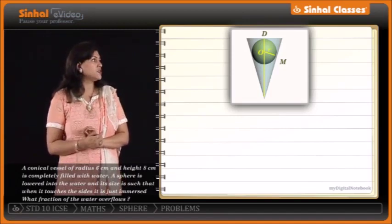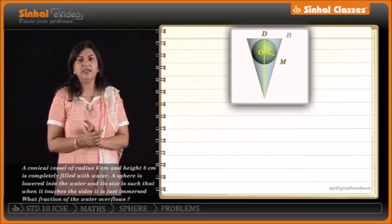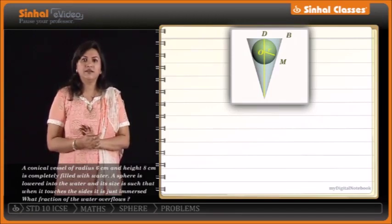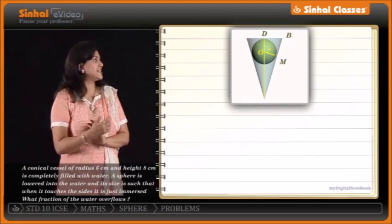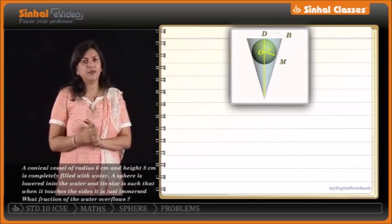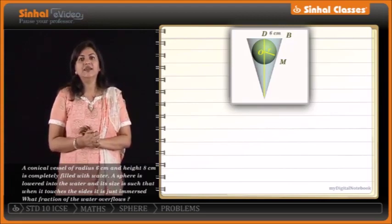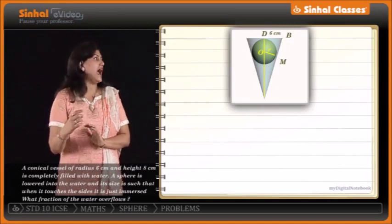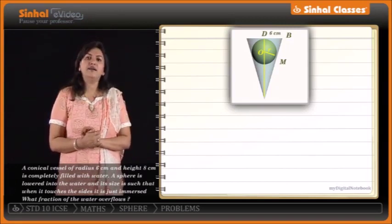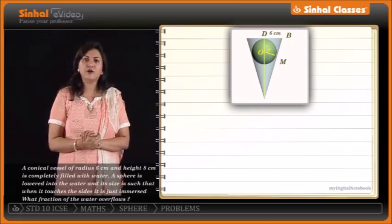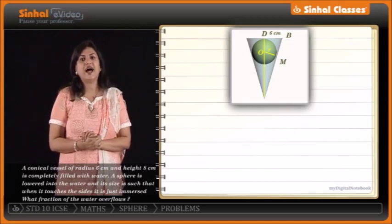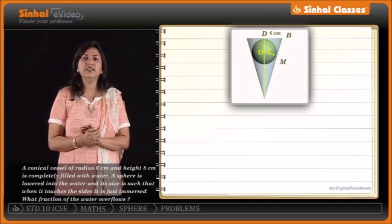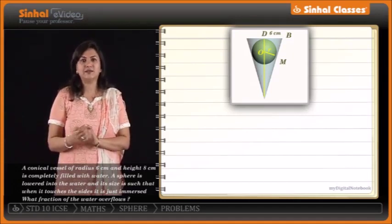VD is the radius of the cone, so BD is 6 cm. Now BD and BM are two tangents drawn from an external point B, and we know that tangents drawn from an external point are equal. So BM is also 6 cm.